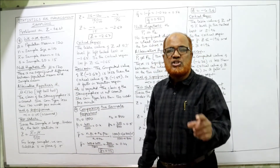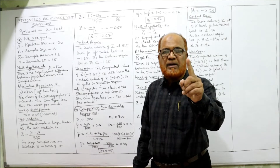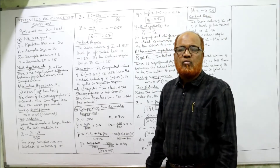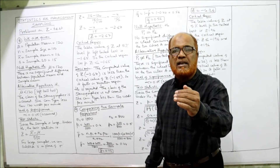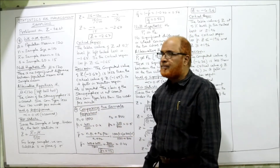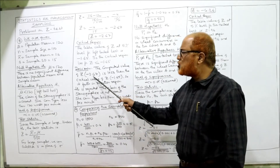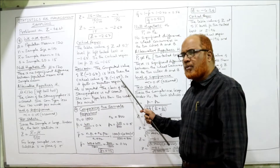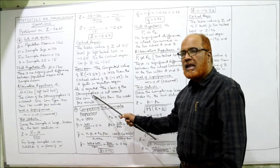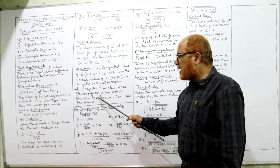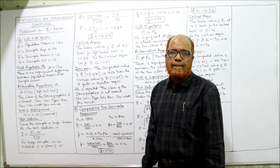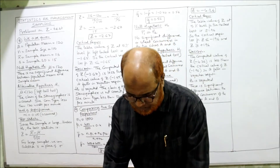Minus 2.67 is less than minus 1.65, so it falls in the rejection region. The null hypothesis is rejected. The stenographer's claim of 120 words per minute is rejected, and the alternative hypothesis is accepted — her typing speed is less than 120 words per minute. The computed value Z minus 2.67 is less than the critical value minus 1.65, so the claim of the stenographer is not correct. That is the conclusion for problem eight.